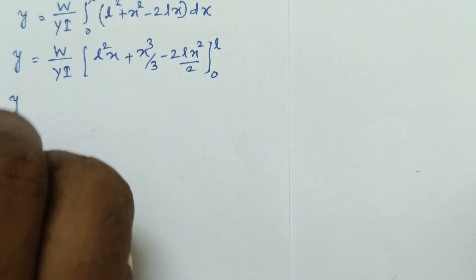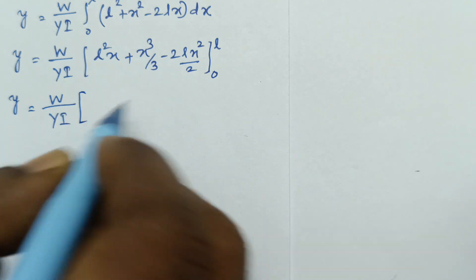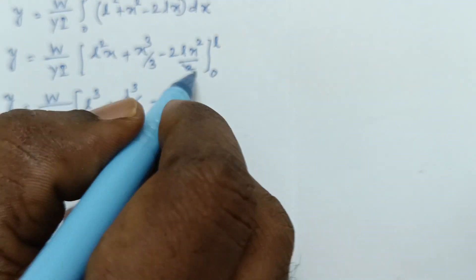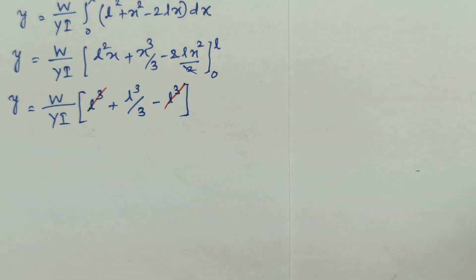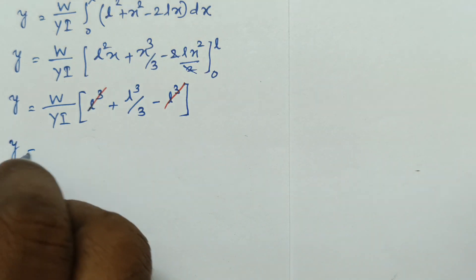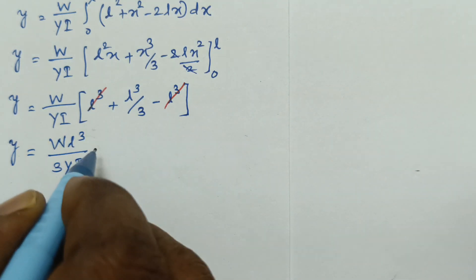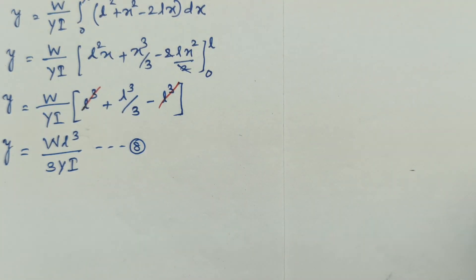After integrating and substituting the limits, y equals W by YI into the result. The final result gives 3YI equals 3YI, leading to the depression formula. The small y represents the depression of the cantilever at the free end.